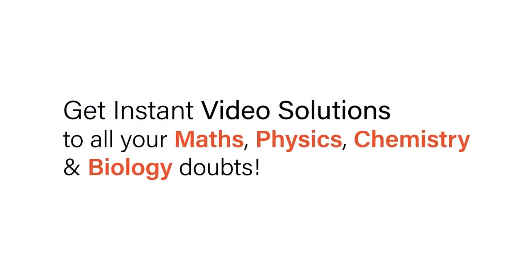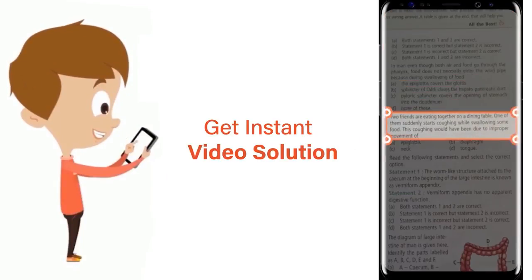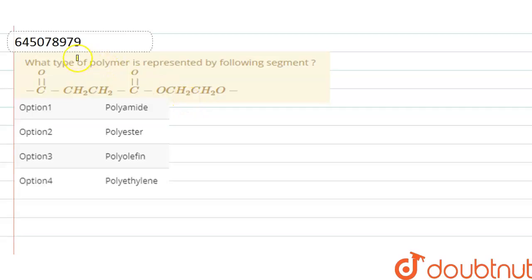With Doubtnet, get instant video solutions to all your maths, physics, chemistry and biology doubts. Just click the image of the question, crop the question and get instant video solution. Download Doubtnet app today. Hello everyone, here the question is: what type of polymer is represented by the following segment?